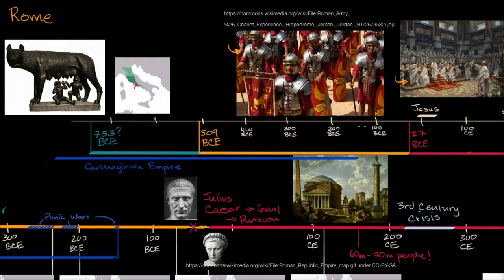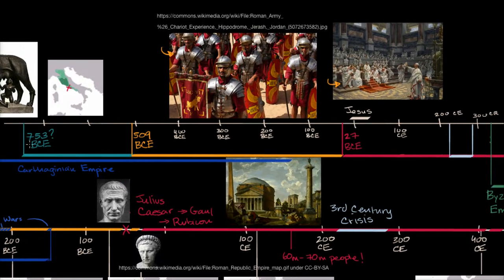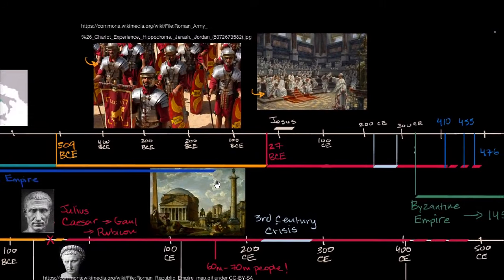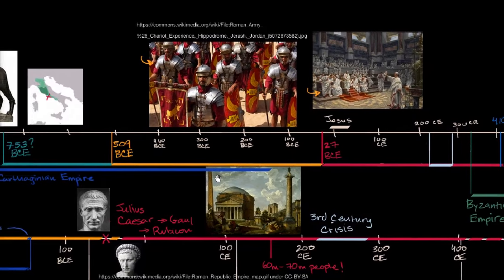So just to make sure we can read what I did here: up here I have a high-level timeline, and then down here I have a timeline that zooms in a little bit and goes into a few more details. And you can see this timeline on top is going from the eighth century BCE all the way to the fifth century CE. So it's covering over 1,000 years of history.